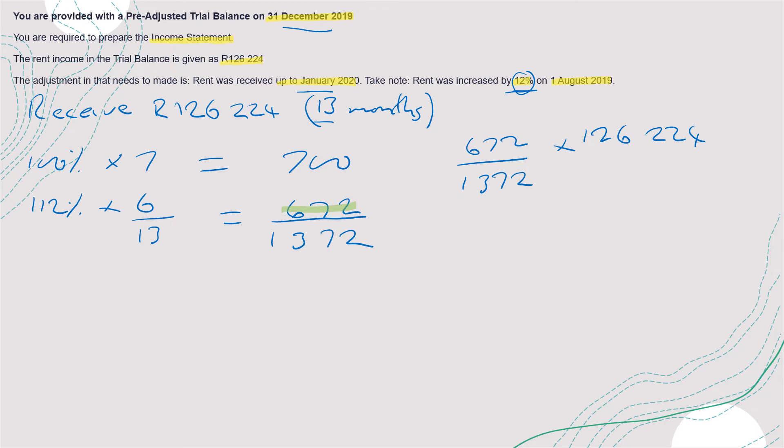This will give you 61,824. So this is total rent received after increase for six months. Our monthly rent income will be 61,824 divided by six. That will be 10,304.